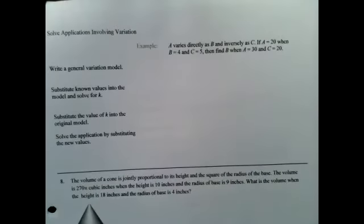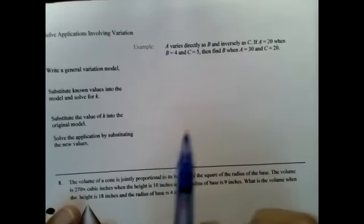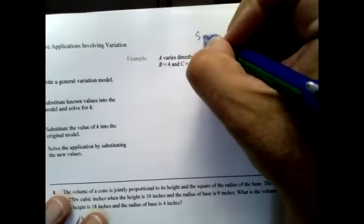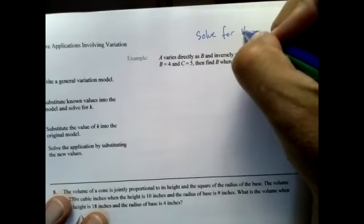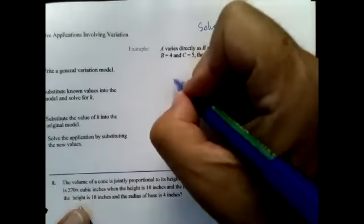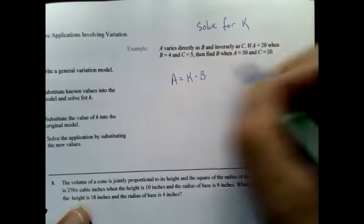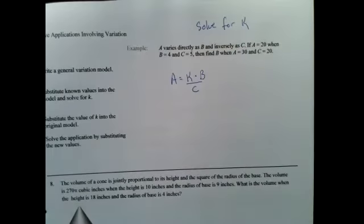All right, so the first thing I'm going to do is write down a model. I have a whole bunch of work here. One of the big things that I need to do is solve for k. What is my k? What is that constant? So I'm going to write this down: a varies directly as b and inversely as c. Questions on that? It's not so bad.